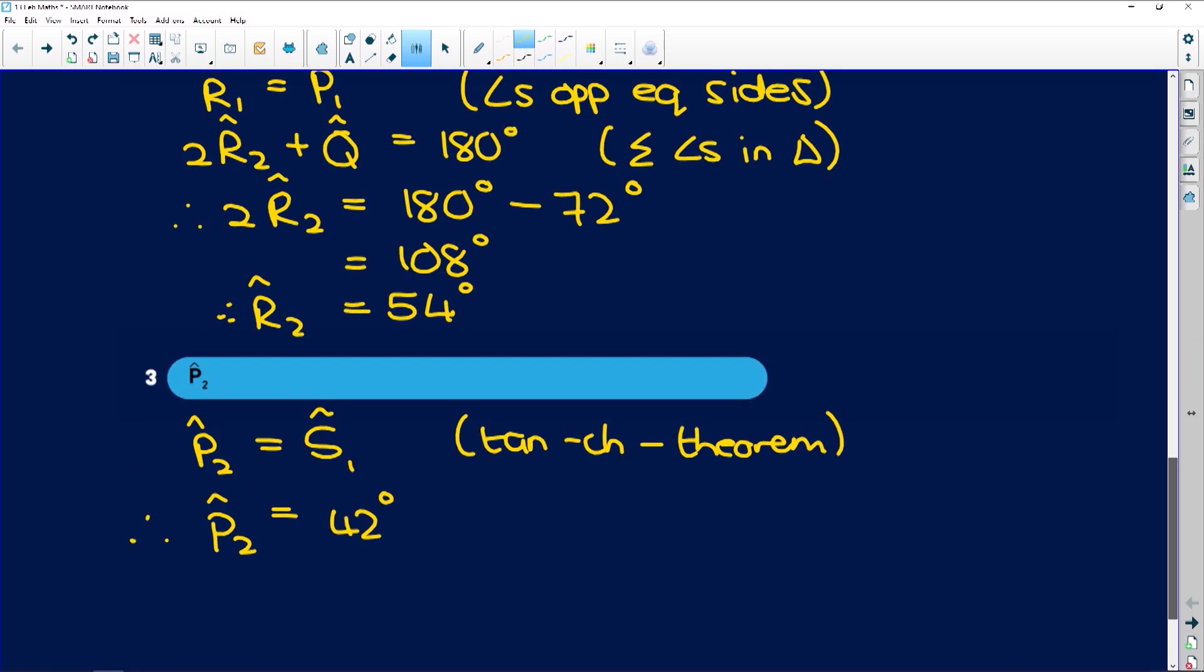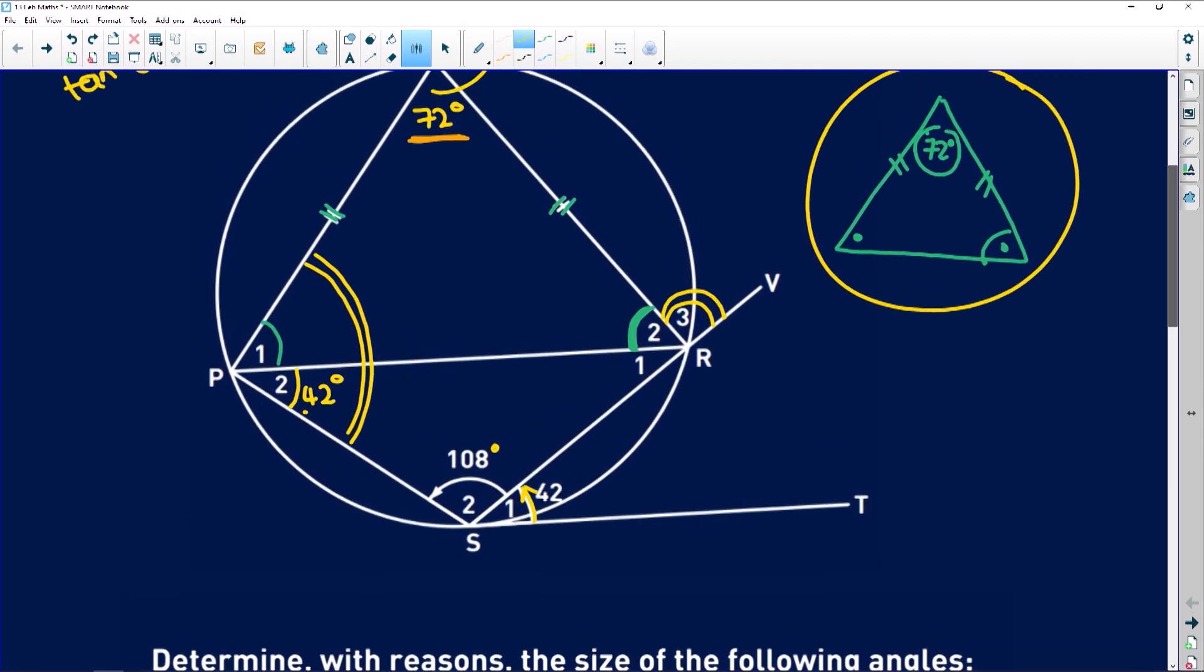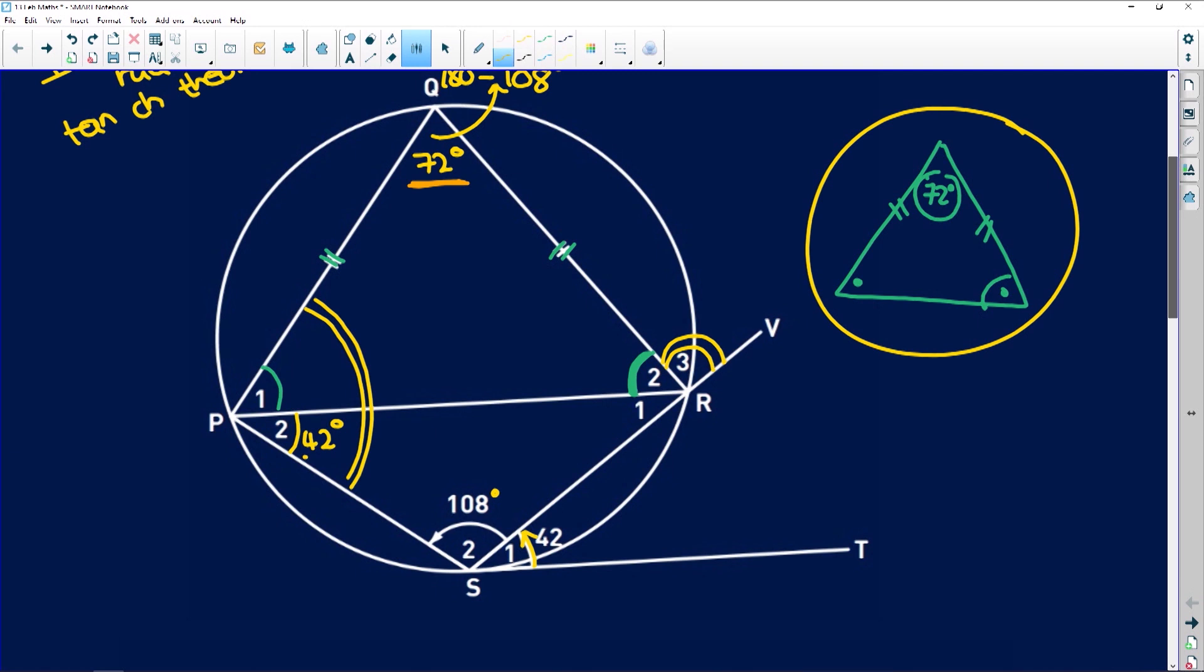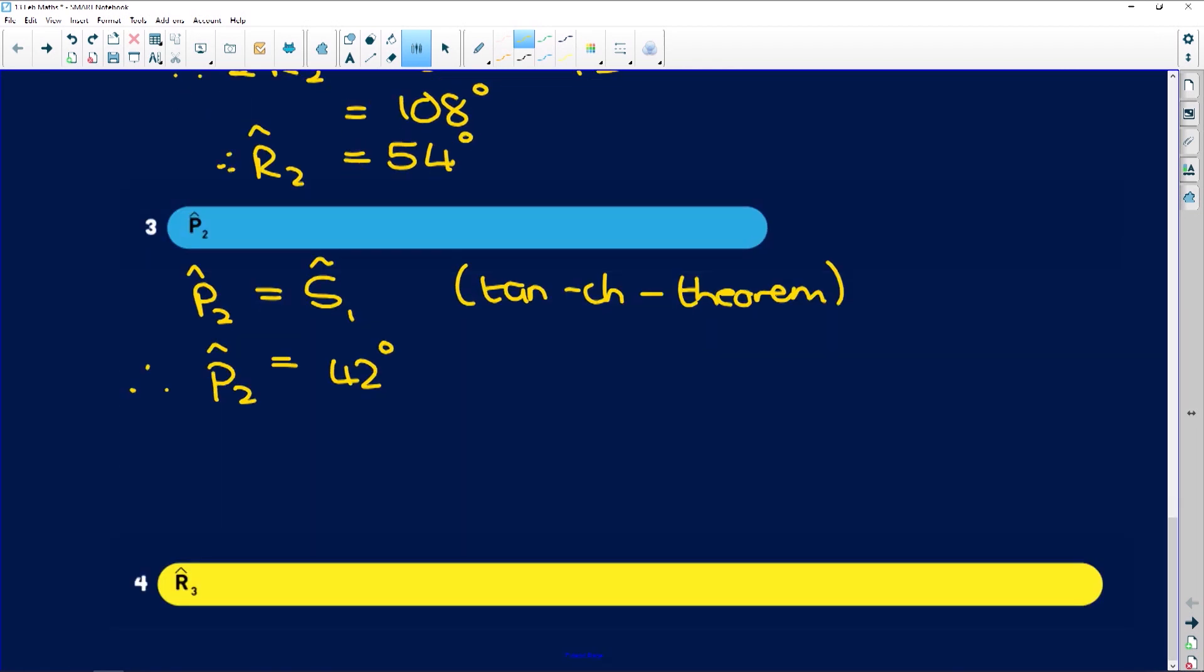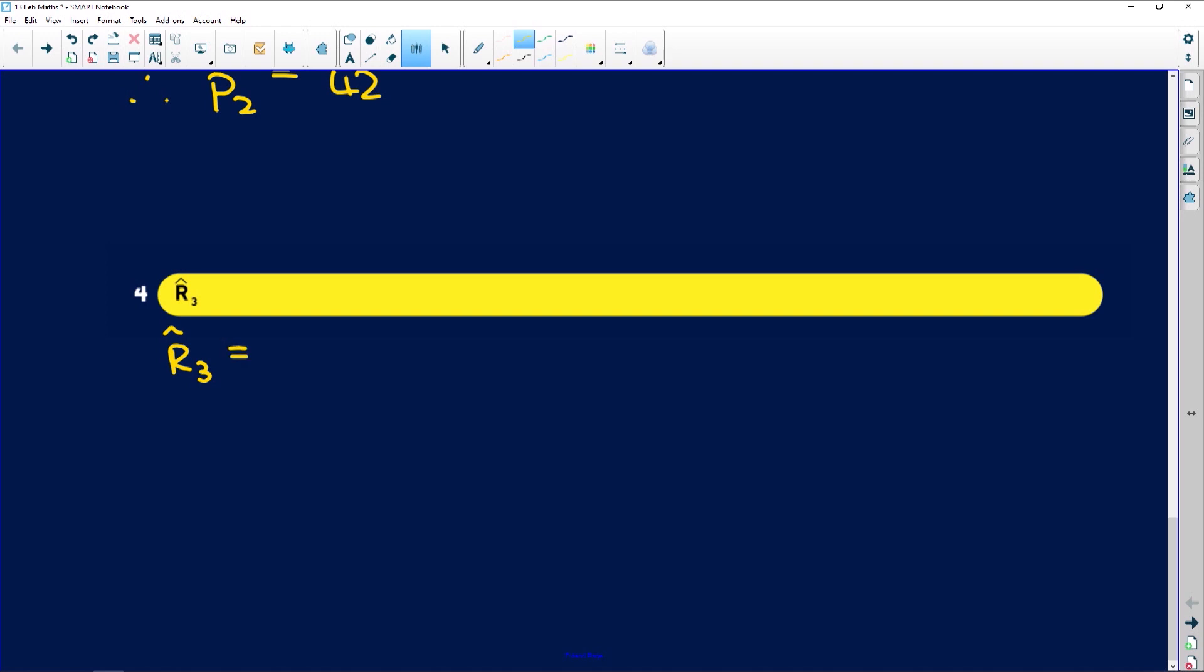And lastly, we need to find angle R3. So, let's take a look. Okay. Well, guys, if you have read your love letter at the beginning and you've identified that this is the exterior angle of a cyclic quad, remember what an exterior angle is. If I have a cyclic quad and I extend the one side, it means that this angle on the exterior of the cyclic quad is equal to the interior opposite angle. So, same instance here. R3 is equal to P1 plus P2.